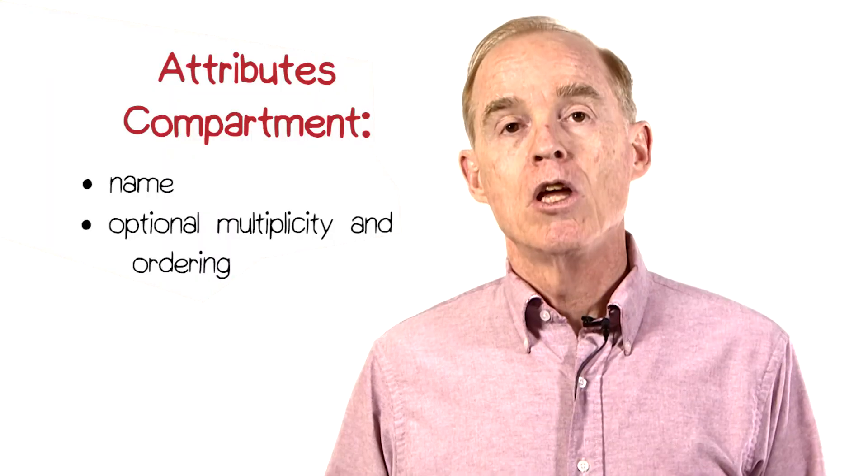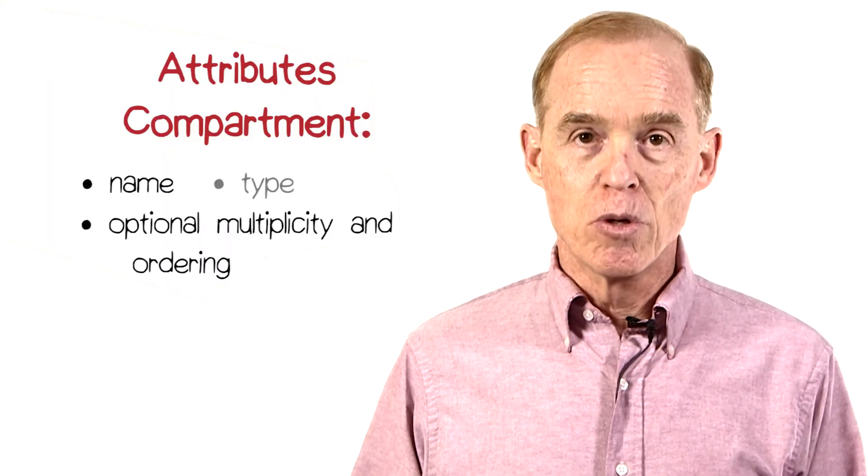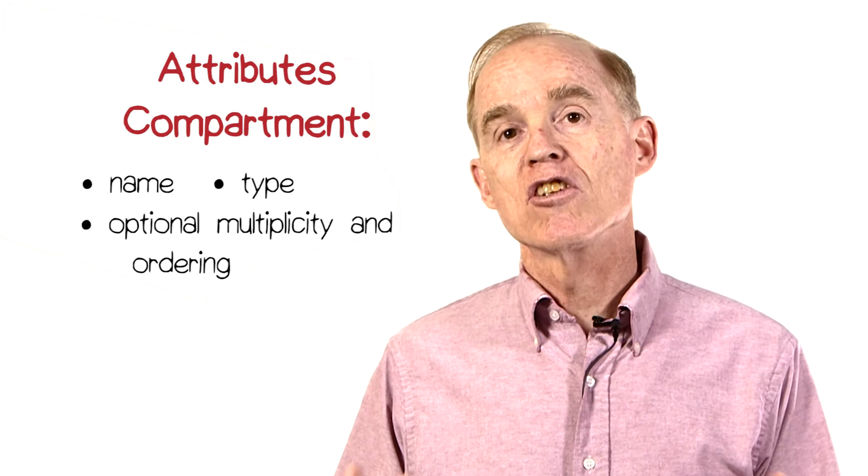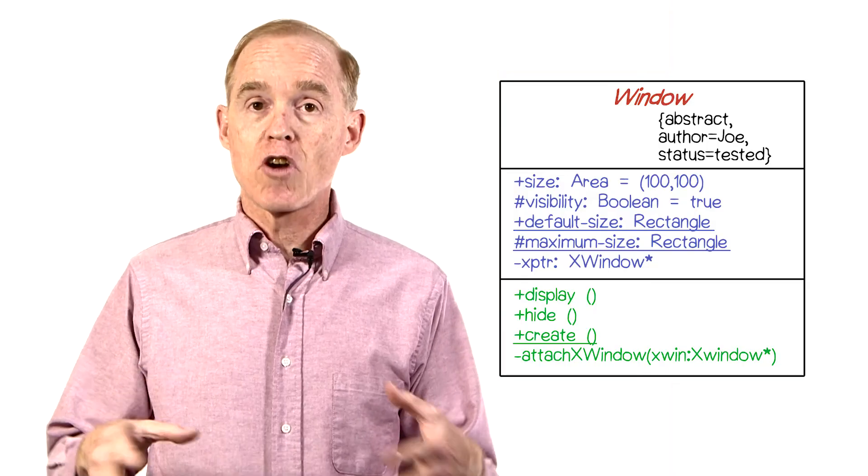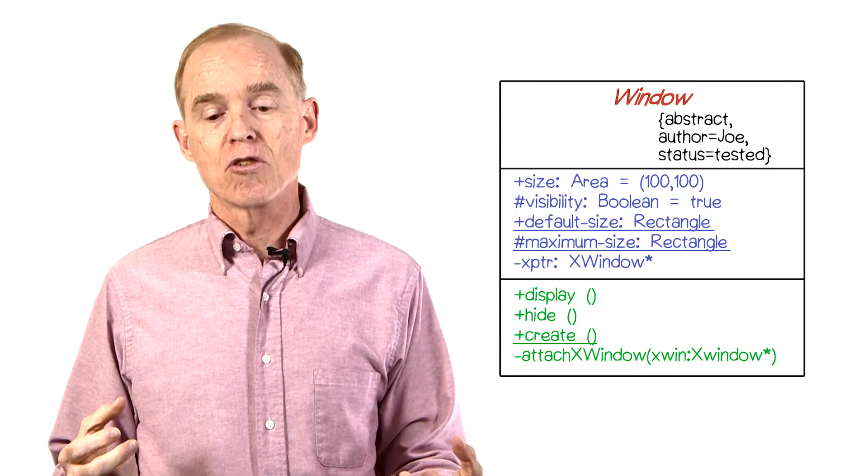but we'll see them later. You should give the type of the attribute, and UML has a set of built-in types that you can use. You can optionally describe an initial value for that particular instance variable.